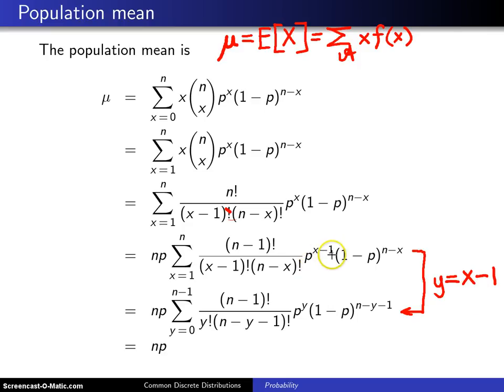Furthermore, when you have p raised to the (x-1) power, now that becomes p to the y. When you have (x-1) factorial, you notice that becomes y factorial. And everything else involving x will get itself updated appropriately. And that's how you wind up with this expression right here.